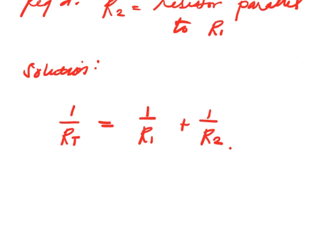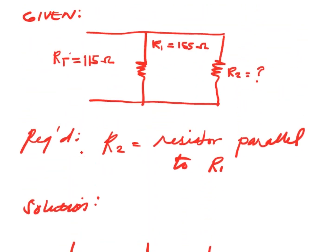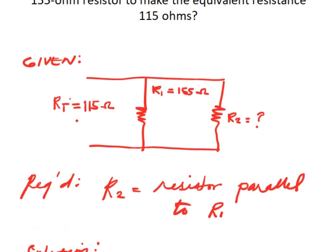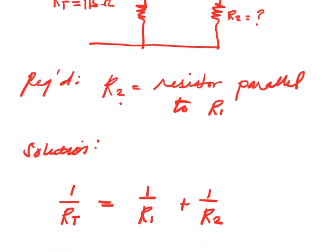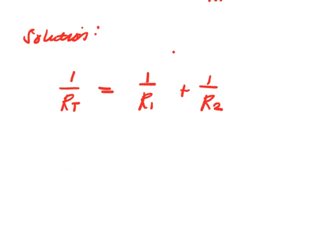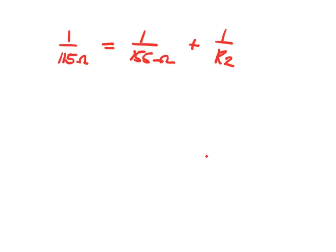So we have R total and we have R1. R total is 115, R1 is 155. So 1 over 115 ohms equals 1 over 155 ohms plus 1 over R2.